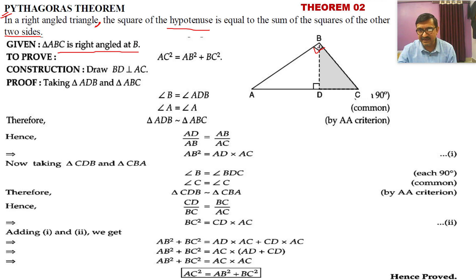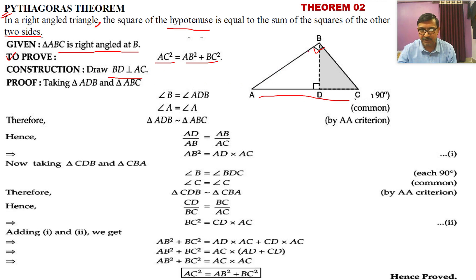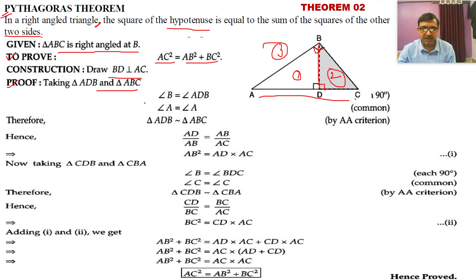If the right angle is at B, then the opposite side AC will be the hypotenuse. To Prove: AC² = AB² + BC². Construction: BD is perpendicular to AC — this dotted line forms right triangles on both sides. Proof starts. We take triangle ADB and triangle ABC. In these two triangles, angle B = angle D = 90°.